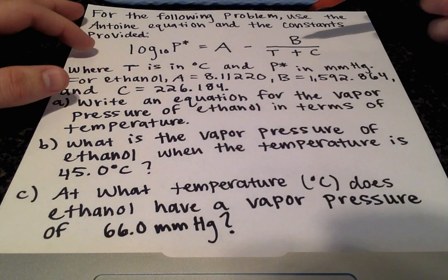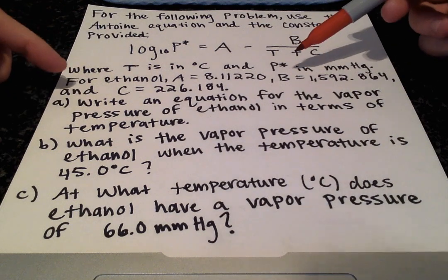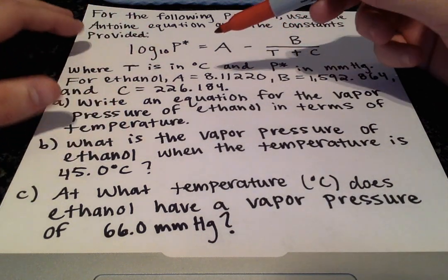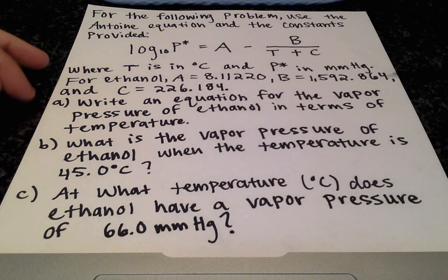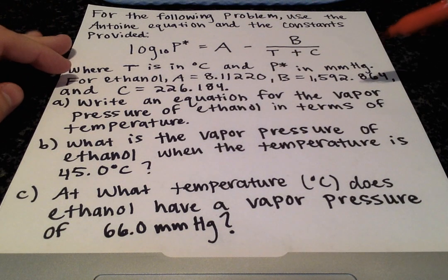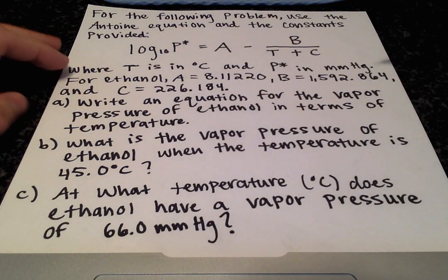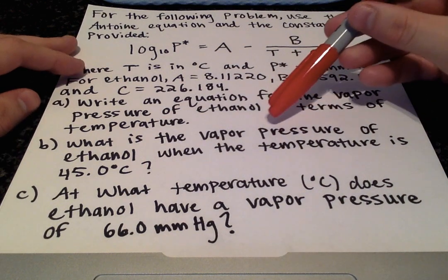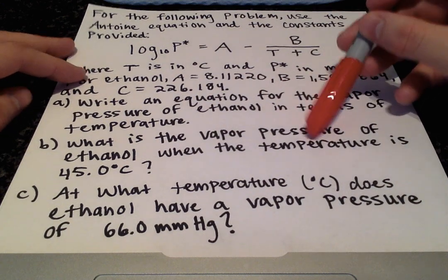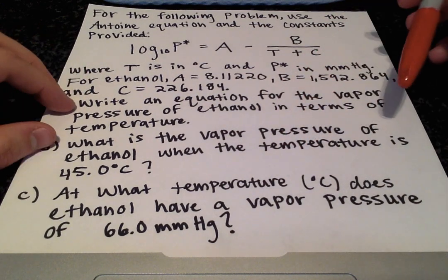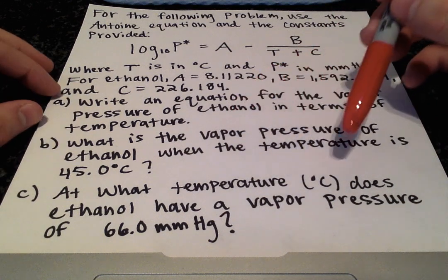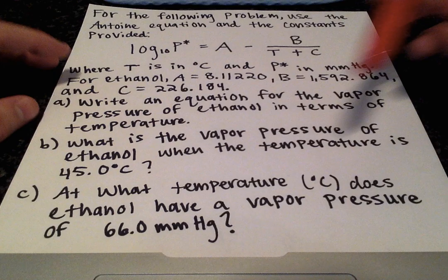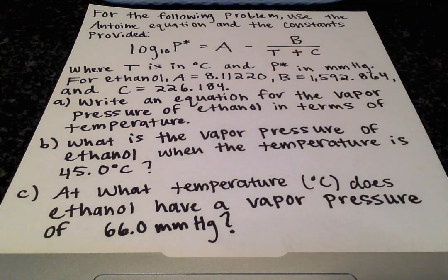We are given the Antoine equation, and we're also given some constants for ethanol, the Antoine constants A, B, and C, and we have three parts here. Part A says to write an equation for the vapor pressure of ethanol in terms of temperature, part B we want to calculate the vapor pressure at a given temperature for ethanol, and part C says, at what temperature does ethanol have a vapor pressure of 66 millimeters of mercury?